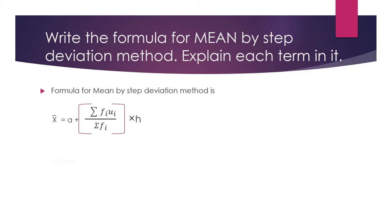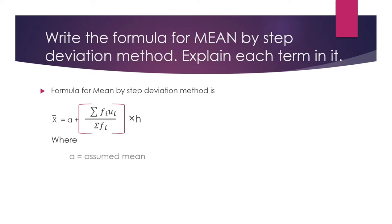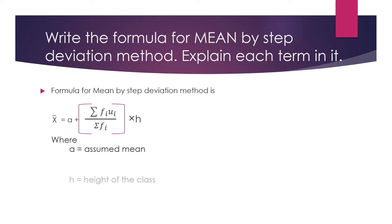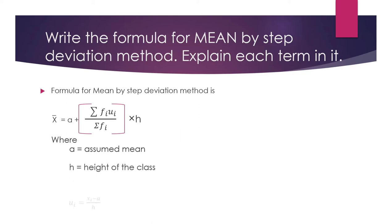Here, a is the assumed mean, h is the height (width) of the class interval, and uᵢ = (xᵢ − a) / h.